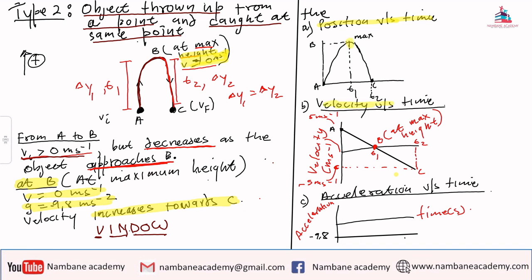For velocity versus time, what do we know? V_initial is greater than zero, so that is point A. It will now decrease until it reaches point B. Hence we say at maximum height or at point B, v equals zero.